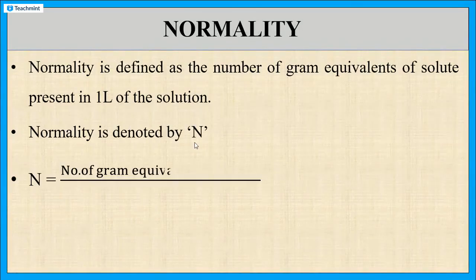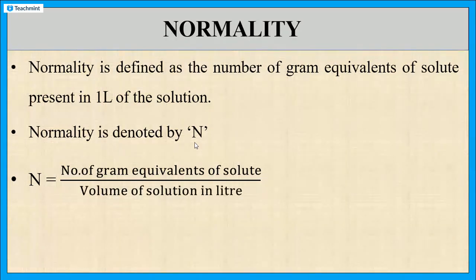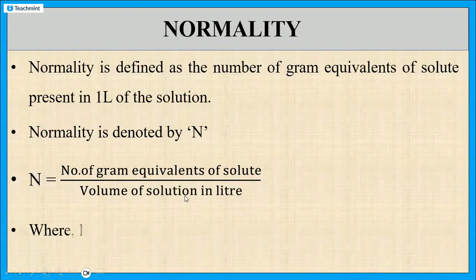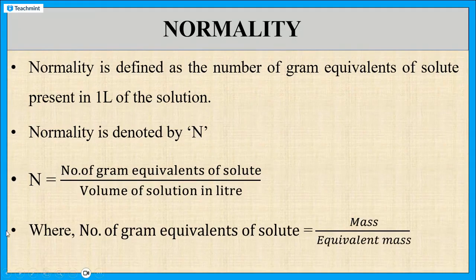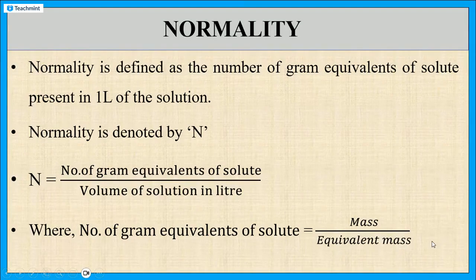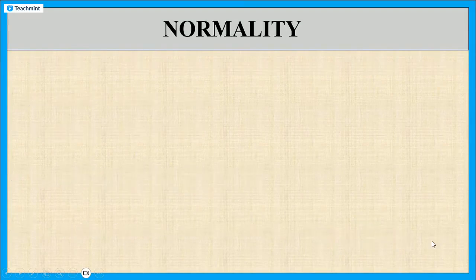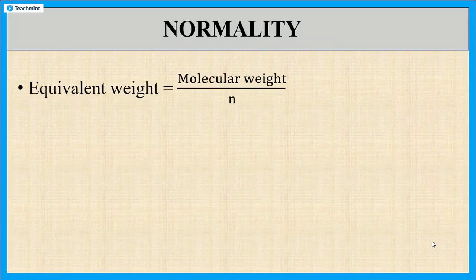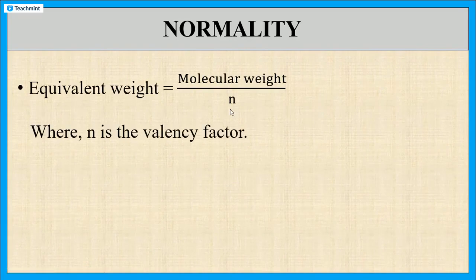Normality N is equal to the number of gram equivalents of solute divided by the volume of the solution in litres. The number of gram equivalents of solute is equal to mass of solute divided by equivalent mass of the solute. The equivalent mass of the solute is equal to molecular weight of the solute divided by N, where N is the valency factor.